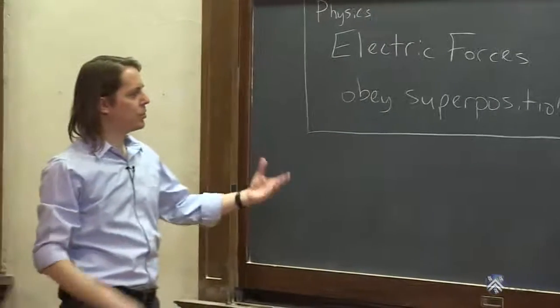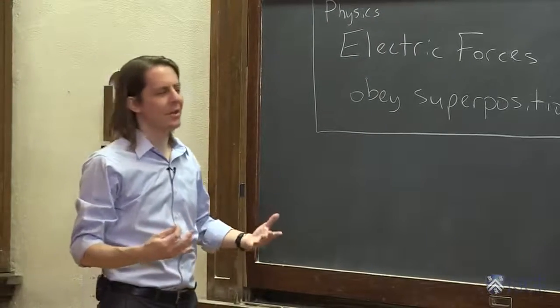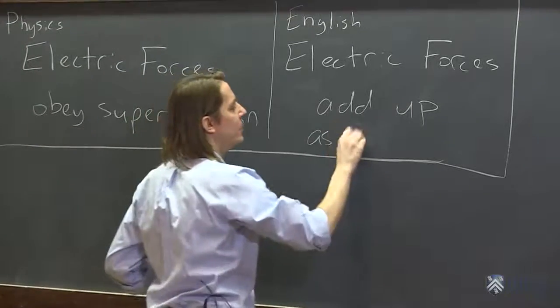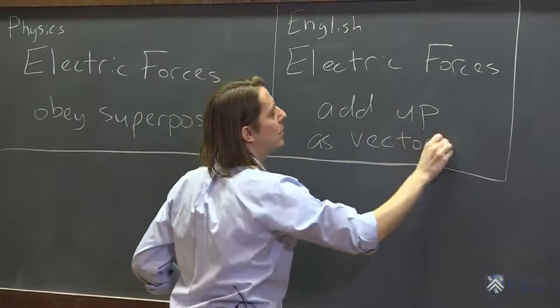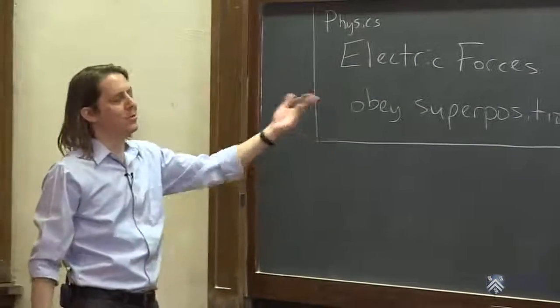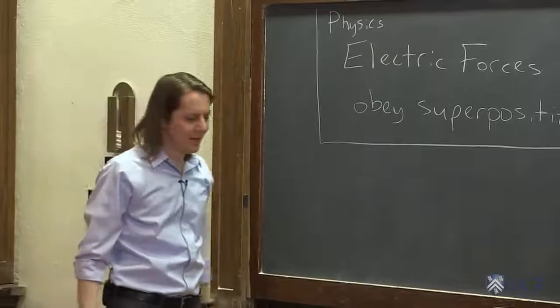If you have force due to one charge, a force due to another charge, you just add them. They add, okay, a little more complicated. They add as vectors. That's implied here, because the force has to be a vector. Therefore, it must obey superposition as a vector.